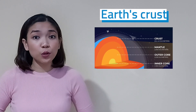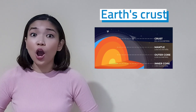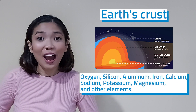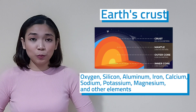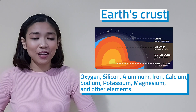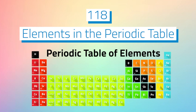The Earth's crust is also made up of many elements such as oxygen, silicon, aluminum, iron, calcium, sodium, potassium, magnesium, and other elements. At present, there are 118 recorded elements in the periodic table, and they are represented in symbols.